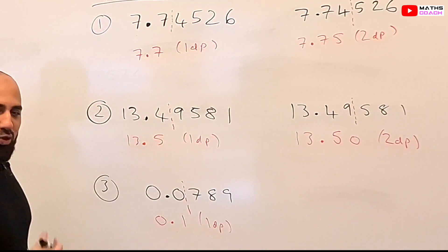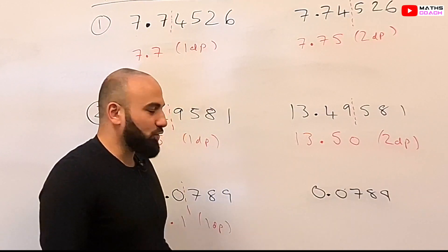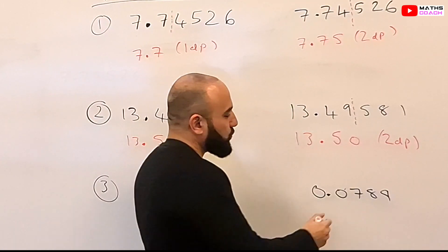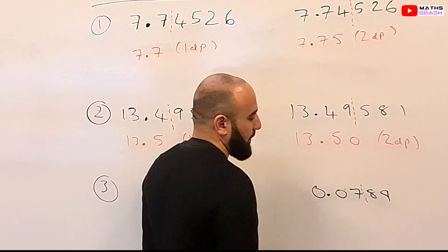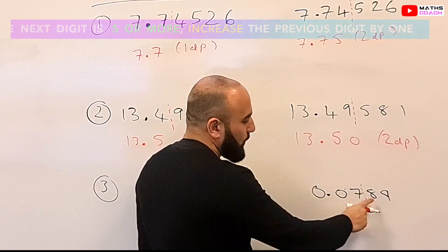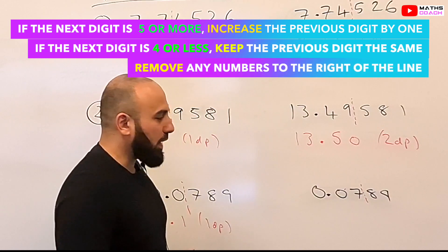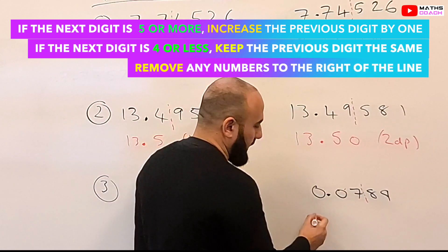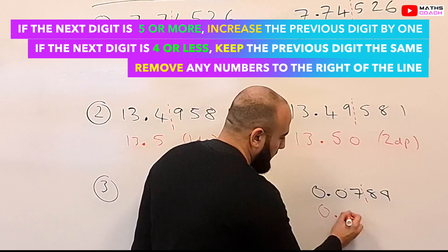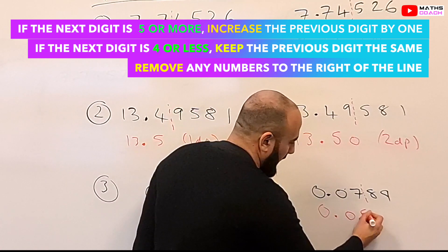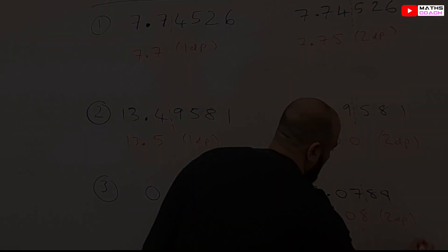Now for the same number to two decimal places, we draw a line after two digits because we want to keep two numbers. We look at the number next to the 7. Because it's 5 and above, we'll increase that 7 to an 8. So we're left with 0.08 to two decimal places.